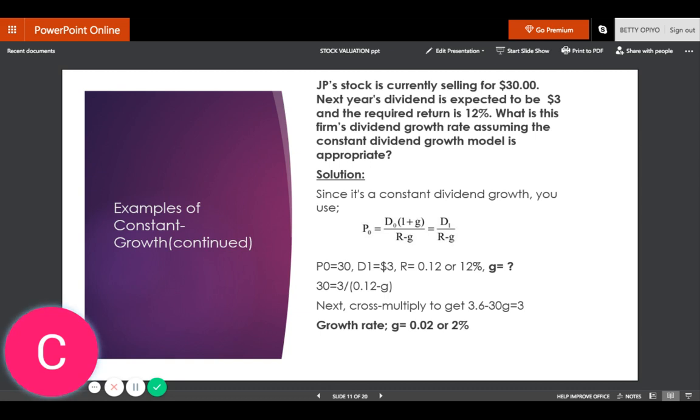You will identify each item in the formula. We need P0 (the current price), D1 (the dividend next year), R (the rate of return), and g (the growth rate). But we don't have the growth rate in this case because the question is asking you to find it.